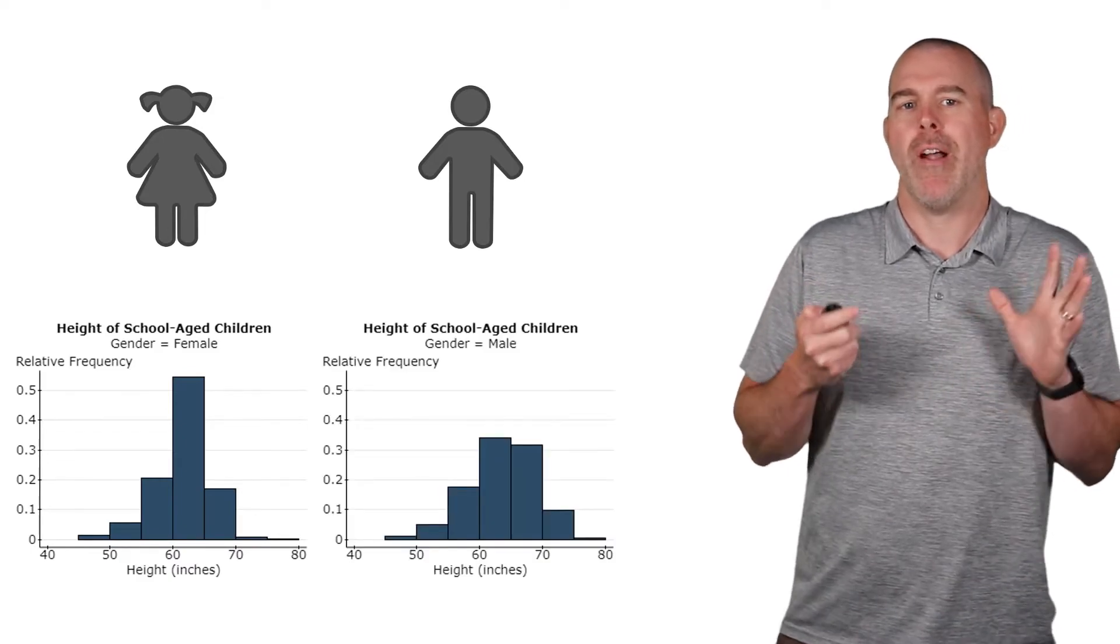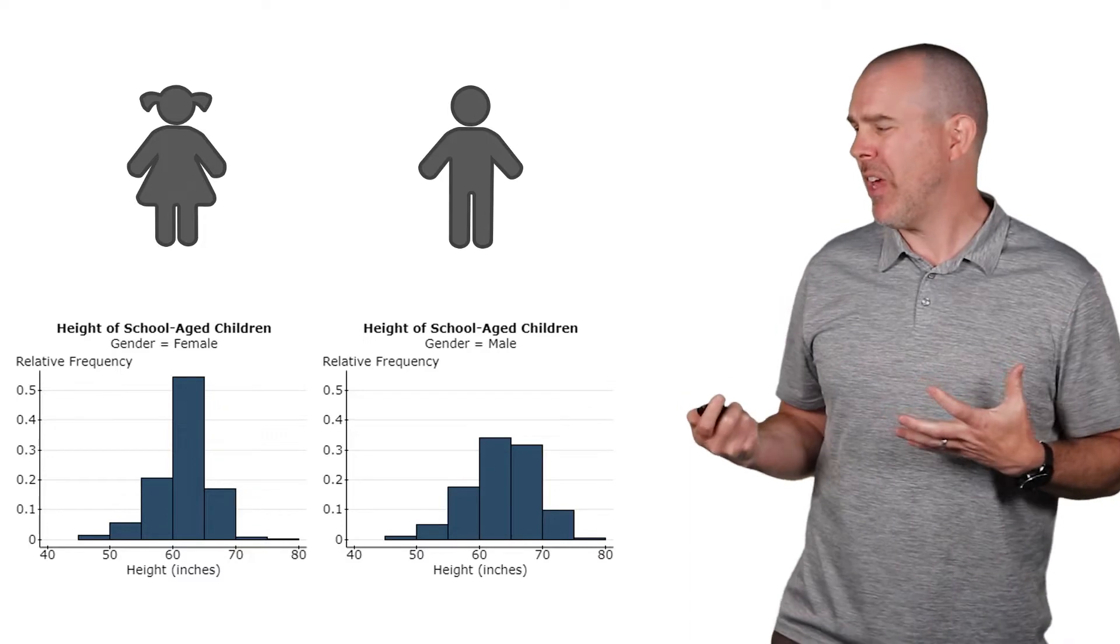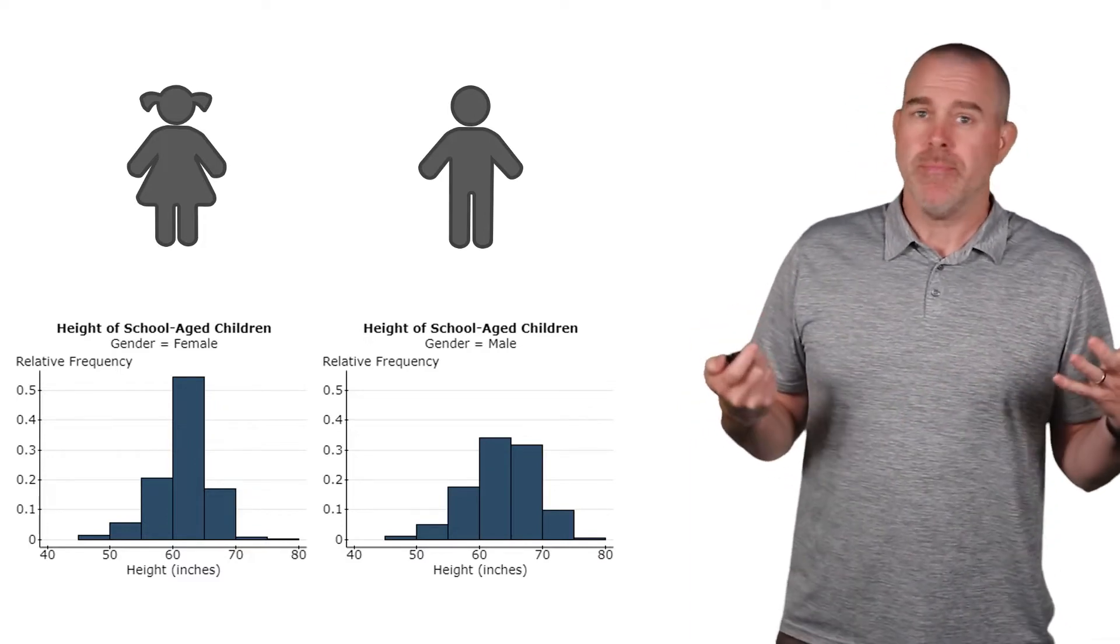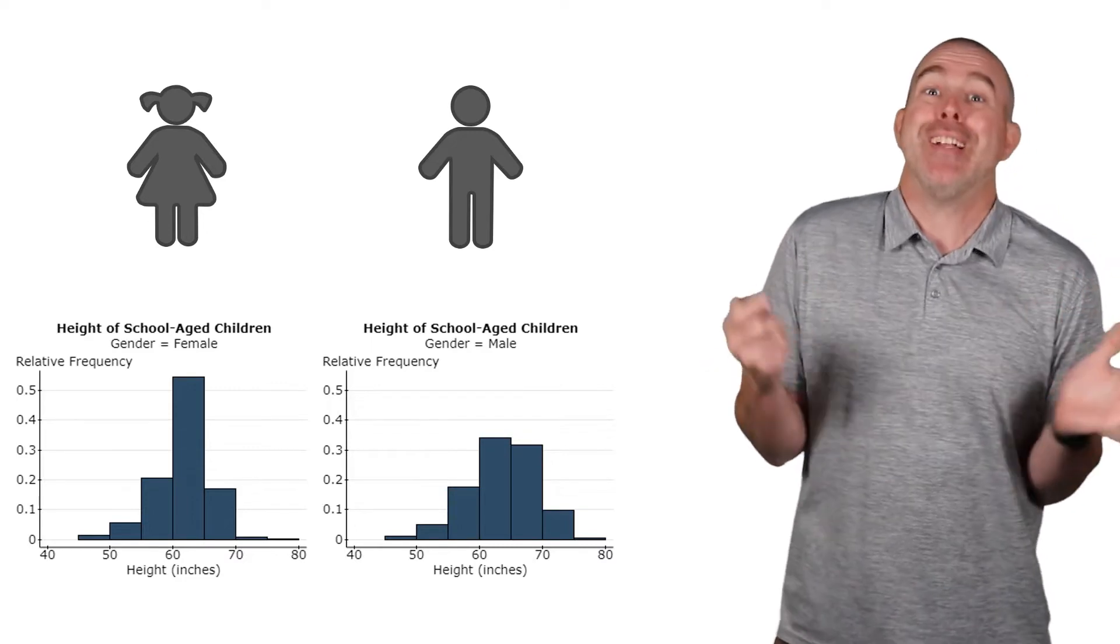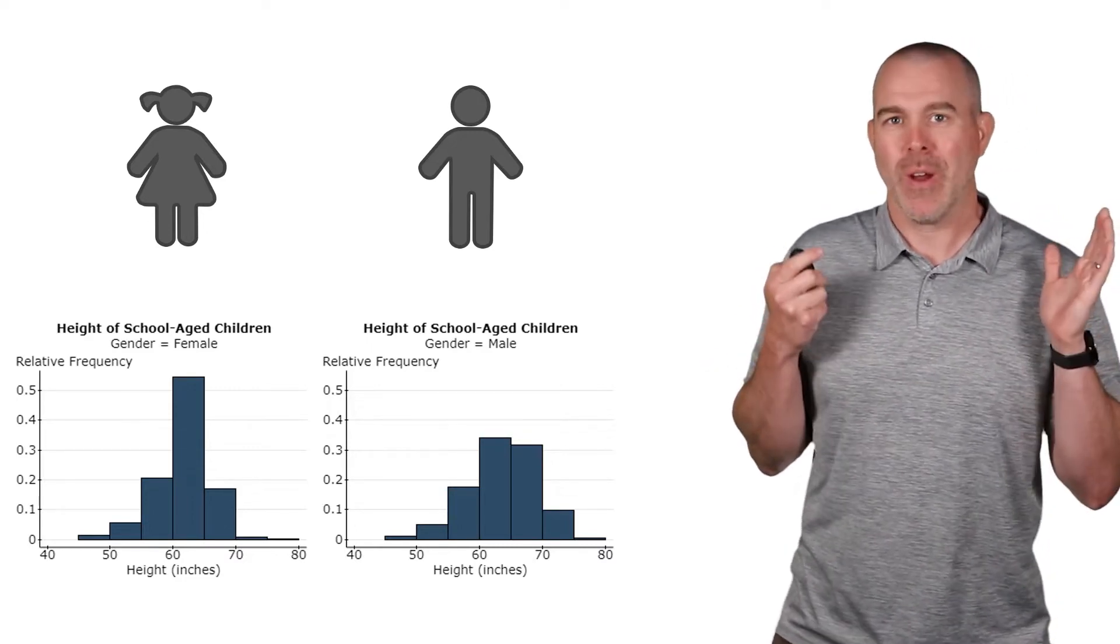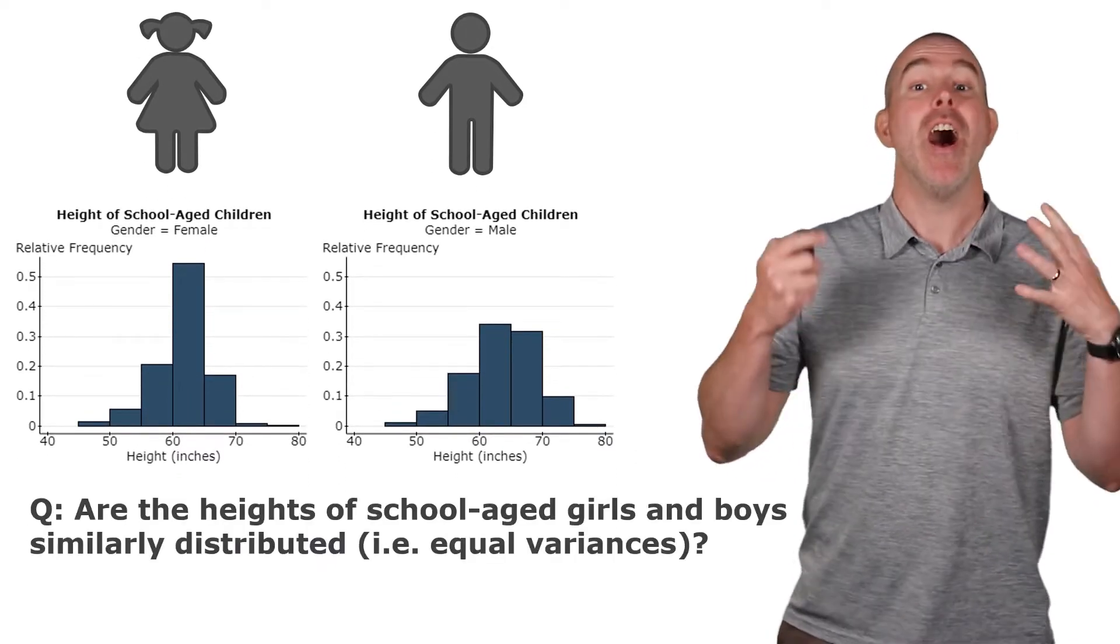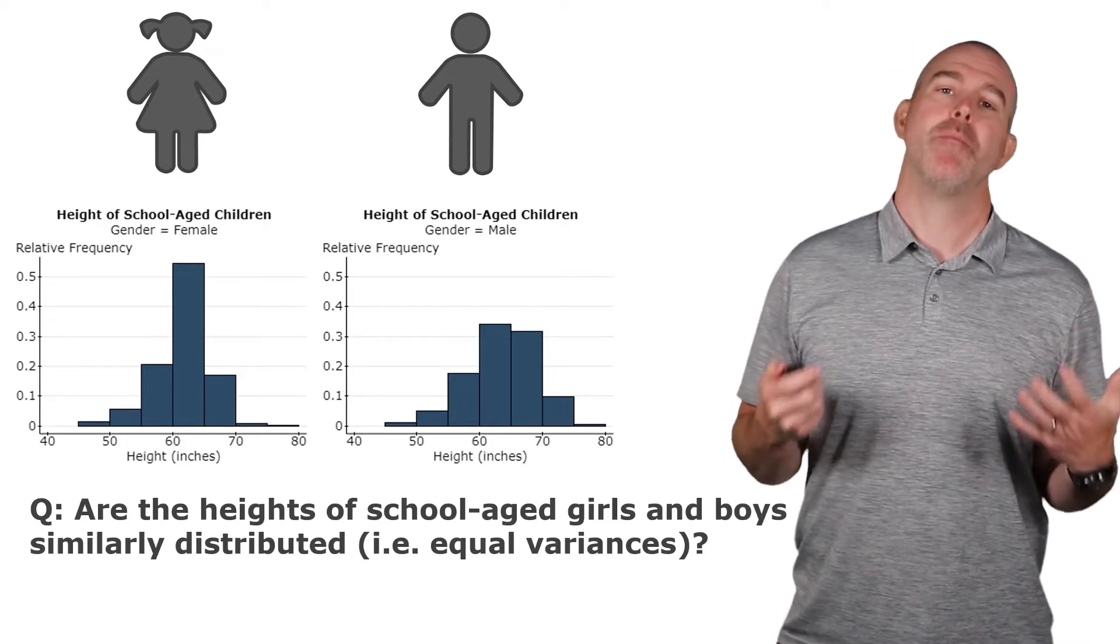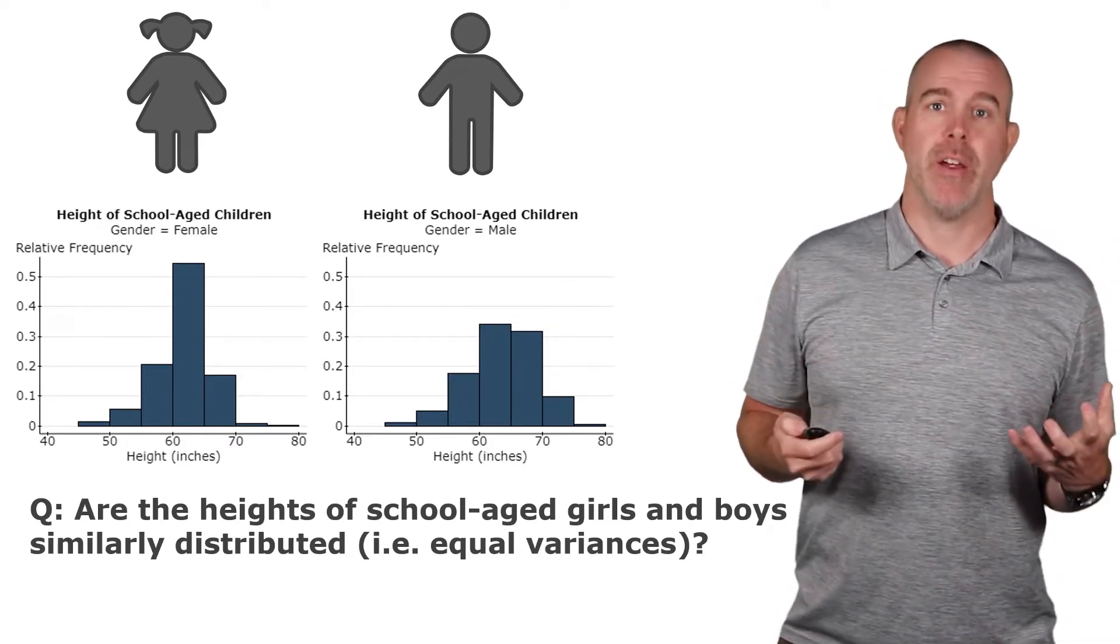The best I could find is comparing boys and girls and their heights. Heights we know are normally distributed. If we look here in these histograms, it's the closest I could find. So we're going to say good enough that they're pretty normally distributed. And so we're going to see if the variances are the same. Our question formally is, are the heights of school-aged girls and boys similarly distributed? Do they have equal variances?